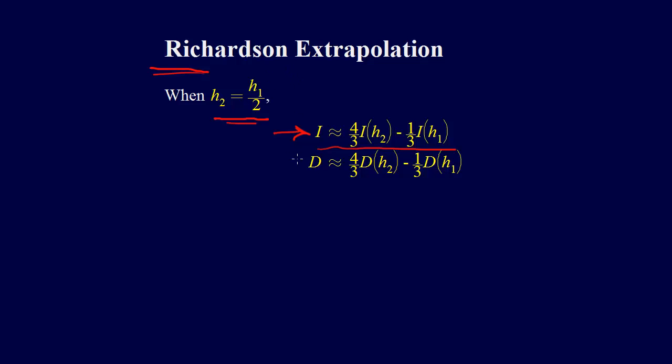It turns out we can do the exact same thing with the derivative, where we have this formula: 4 thirds times the derivative at H2 minus 1 third times the derivative with step size H1.